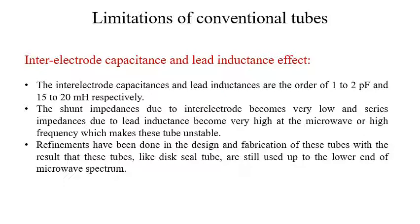First, we consider the inter-electrode capacitance and lead inductance effect. The inter-electrode capacitances and lead inductances are on the order of 1 to 2 pF and 15 to 20 mH respectively. The shunt impedances due to inter-electrode capacitance become very low, and series impedances due to lead inductance become very high at microwave or higher frequency regions, which makes these tubes unstable. Refinements have been done in design and fabrication, such as the disc seal tube, which is still used at the lower end of the microwave spectrum, but those are not popular tubes.